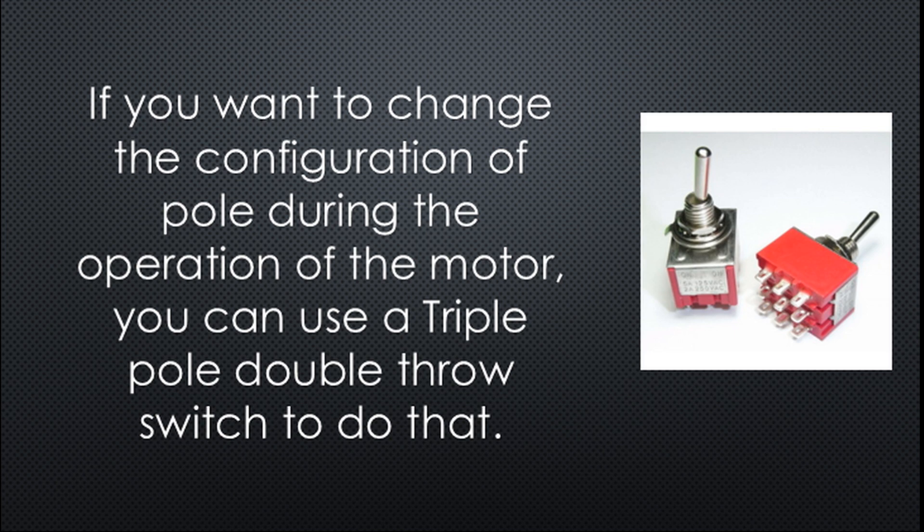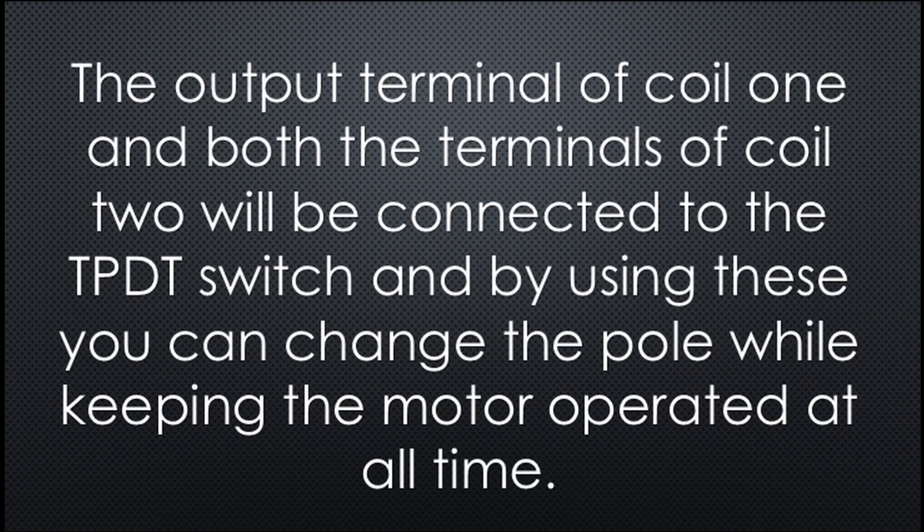If you want to change the configuration of pole during the operation of the motor, you can use a triple-pole double-throw switch to do that. The output terminal of coil one and both the terminals of coil two will be connected to the TPDT switch, and by using this you can change the pole while keeping the motor operated at all times.